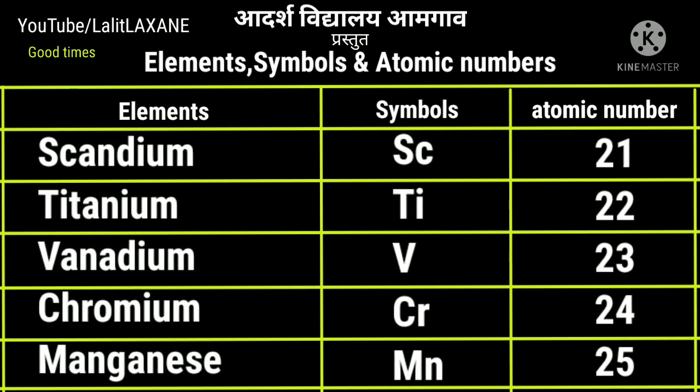With atomic number 21, we have scandium Sc. Then titanium Ti with atomic number 22. Vanadium V, 23. Chromium with symbol Cr, atomic number 24. Manganese with symbol Mn and atomic number 25.